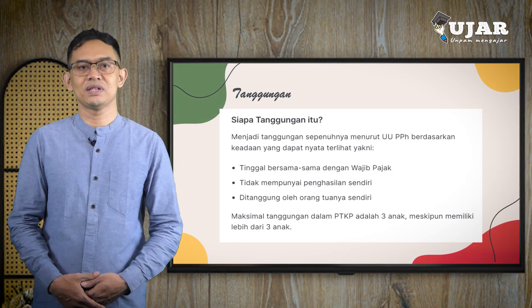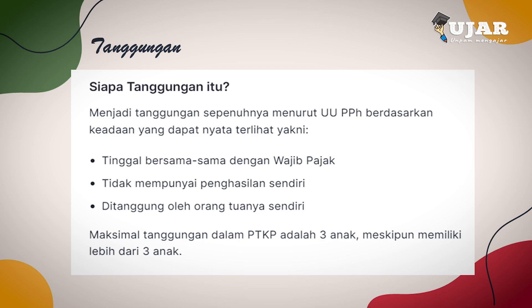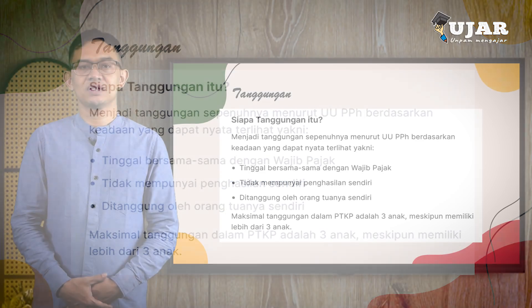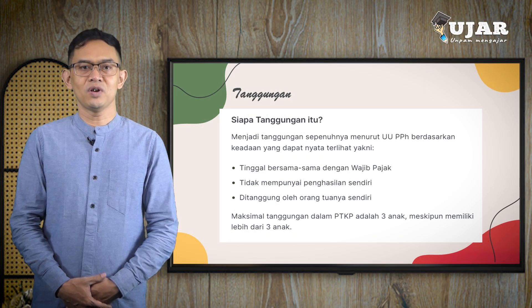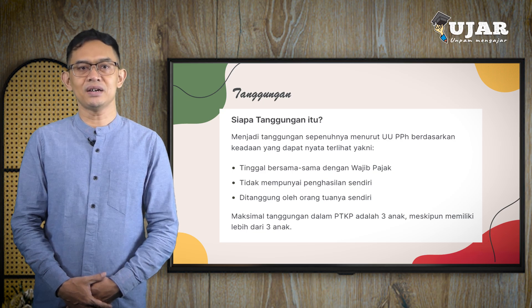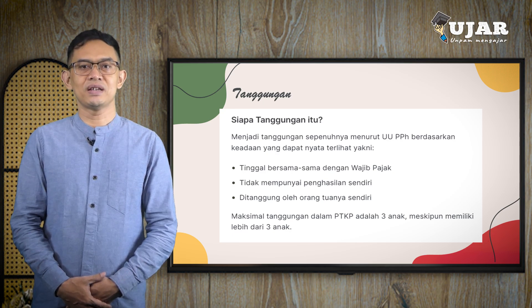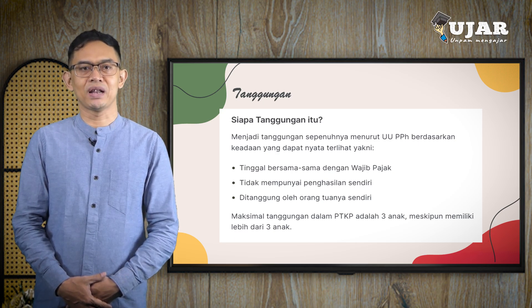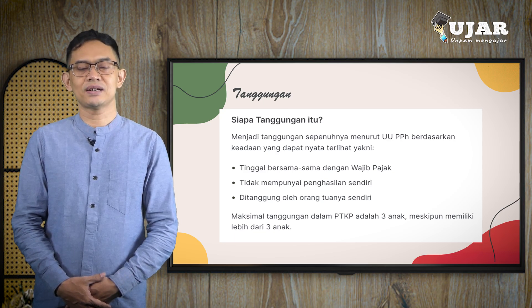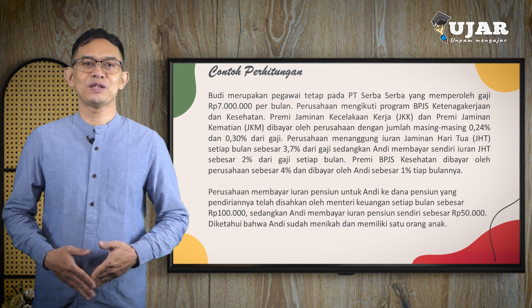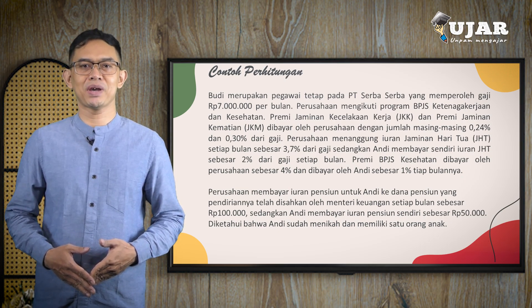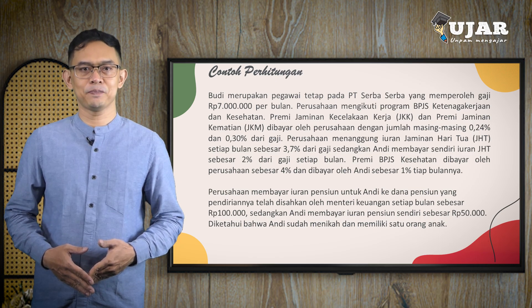Kemudian siapa tanggungan itu? Yang menjadi tanggungan sepenuhnya menurut UU PPH berdasarkan keadaan yang dapat terlihat, yakni: tinggal bersama dengan wajib pajak, tidak mempunyai penghasilan sendiri, ditanggung oleh orang tua sendiri. Maksimal tanggungan dalam PTKP adalah 3 anak meskipun memiliki lebih dari 3 anak. Ketentuan jumlah tanggungan maksimal 3 orang setiap wajib pajak. Sedangkan yang dimaksud dengan keluarga sedarah ialah orang tua kandung, saudara kandung, dan anak. Sedangkan yang dimaksud keluarga semenda adalah mertua, anak tiri, serta ipar.